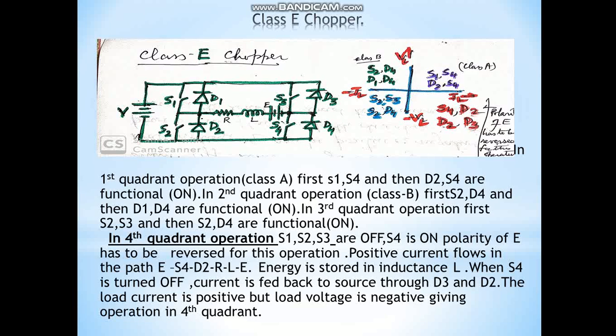Now I will discuss Class C chopper. Class C chopper can be operated in any one of the four quadrants — that means it can operate in the first, second, third, or fourth quadrant. When operating in the first quadrant, it acts as a Class A chopper, and switches S1 and S4 are functional.